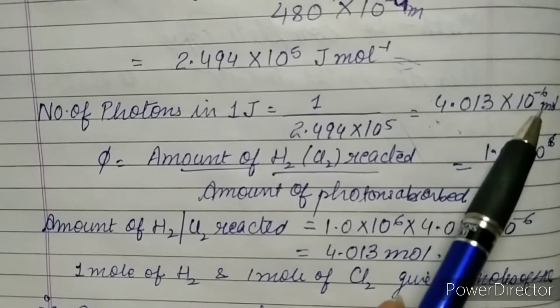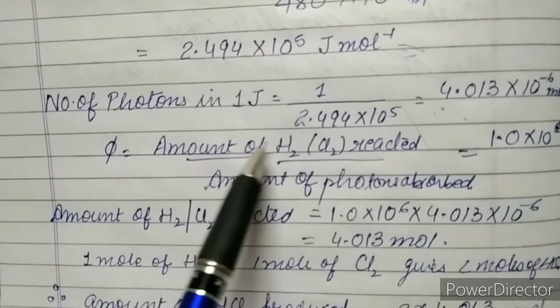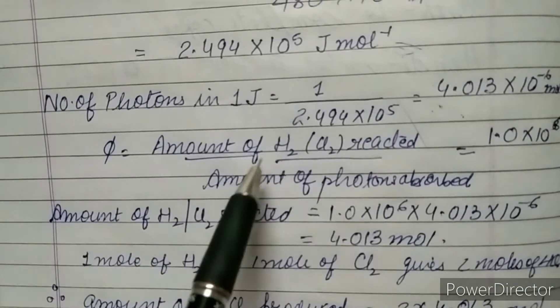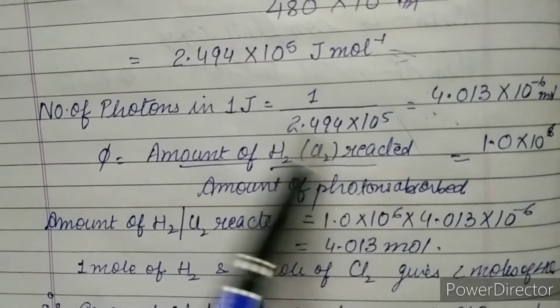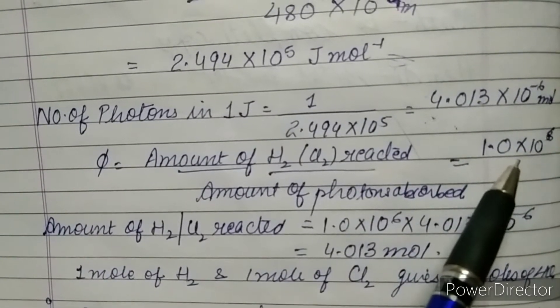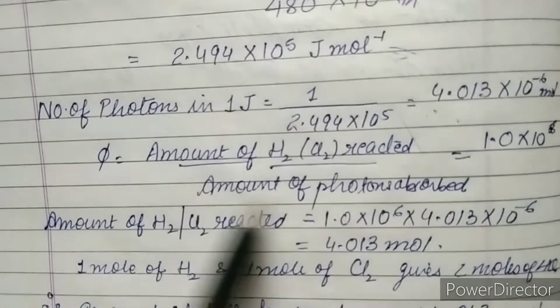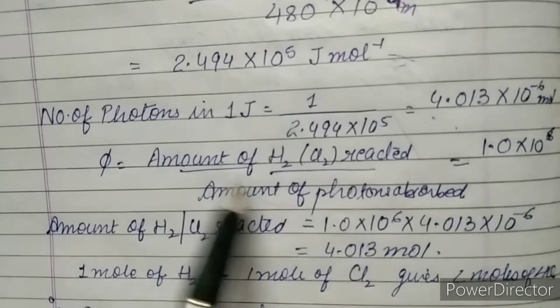The answer comes out to be 4.013 × 10⁻⁶ mole. Now the quantum yield is amount of H₂ or Cl₂ reacted by the amount of photon absorbed, and quantum yield is given as 1 × 10⁶. Now we know this factor, right? We have already found out this factor.